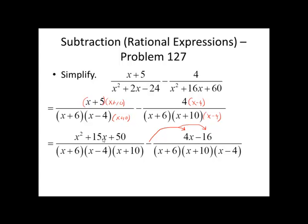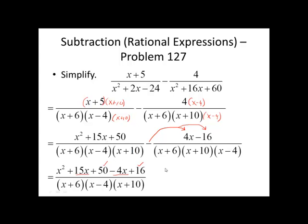We'll collect all of this over one denominator. And now it's time to combine like terms. 15x and negative 4x and 50 and positive 16. Combine those together and we get x squared plus 11x plus 66 over the common denominator. Now from here you should try to factor this numerator, but this trinomial is prime so there's nothing else we can do here.